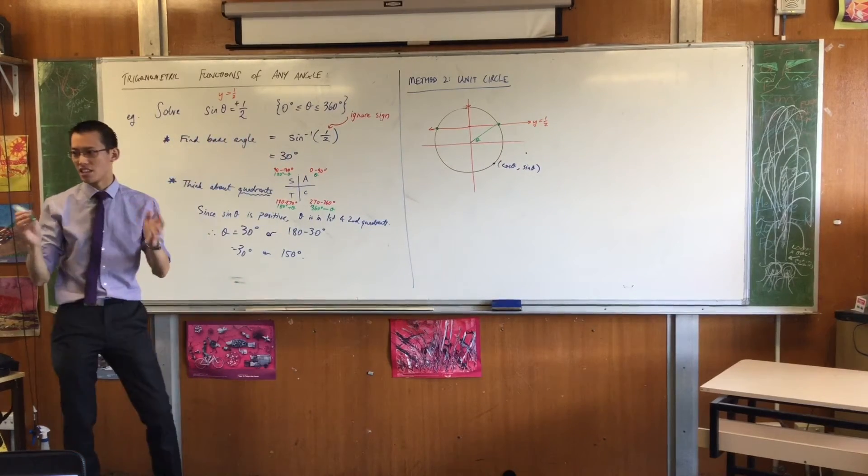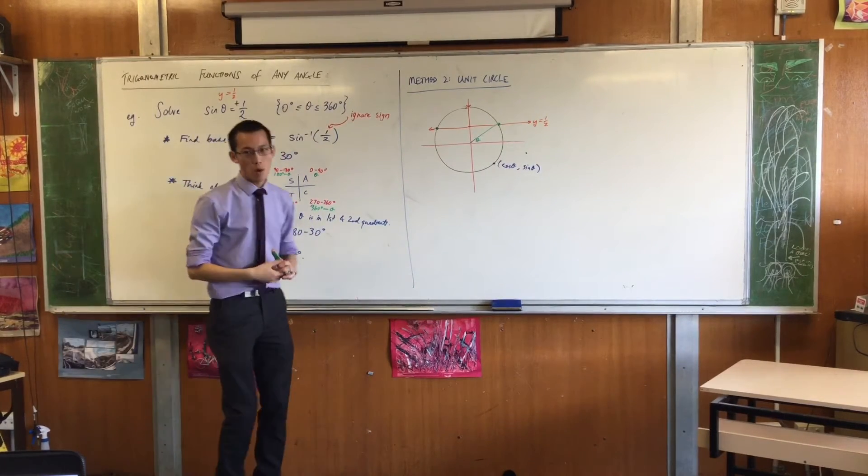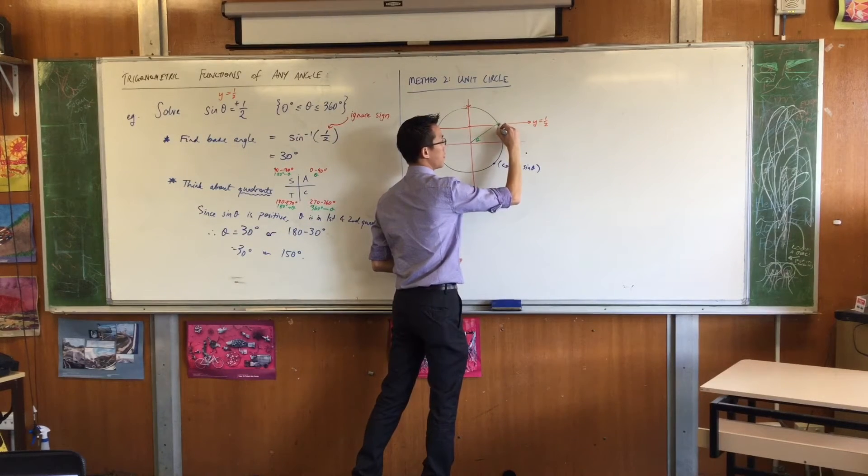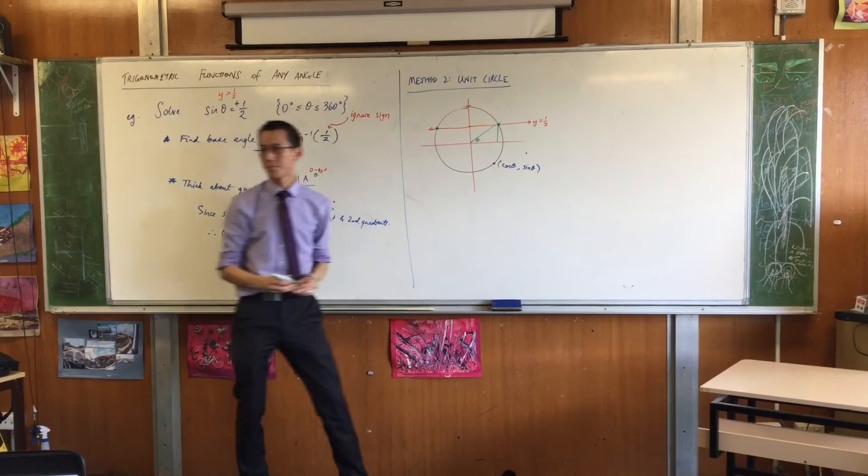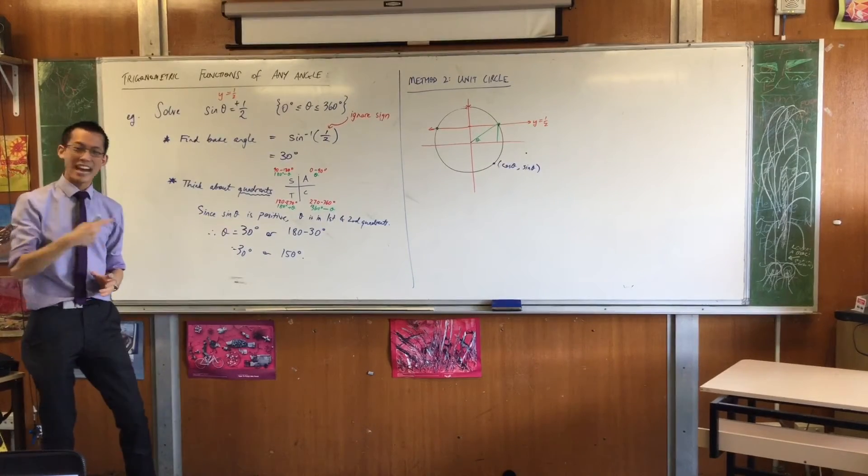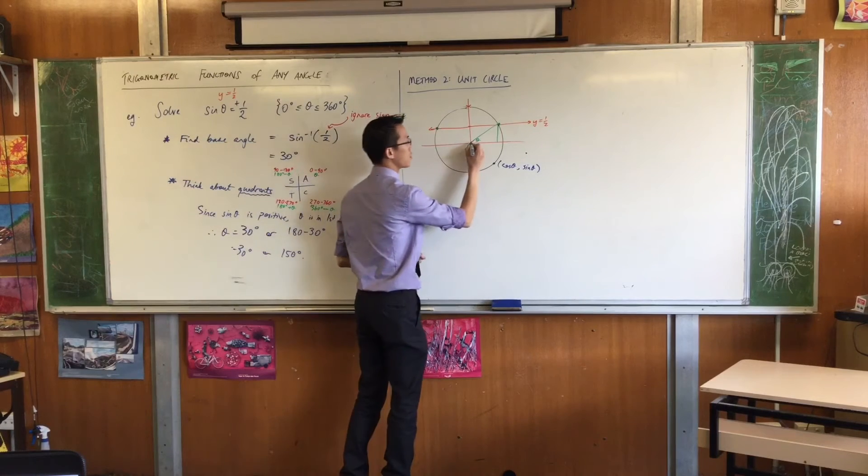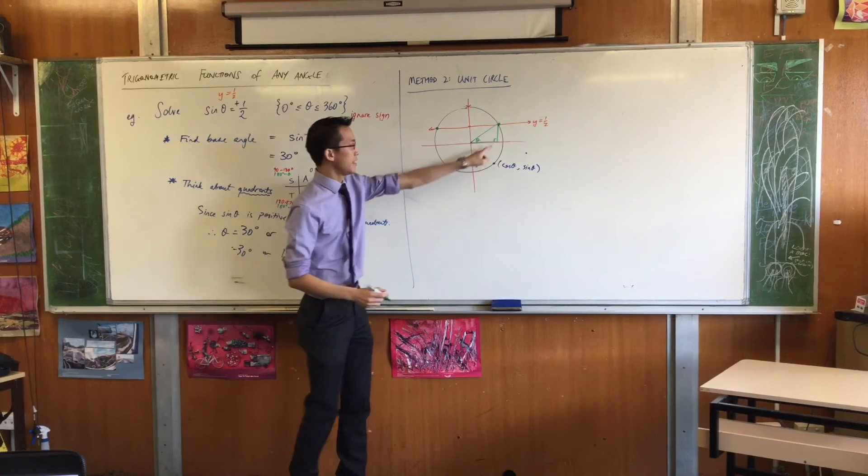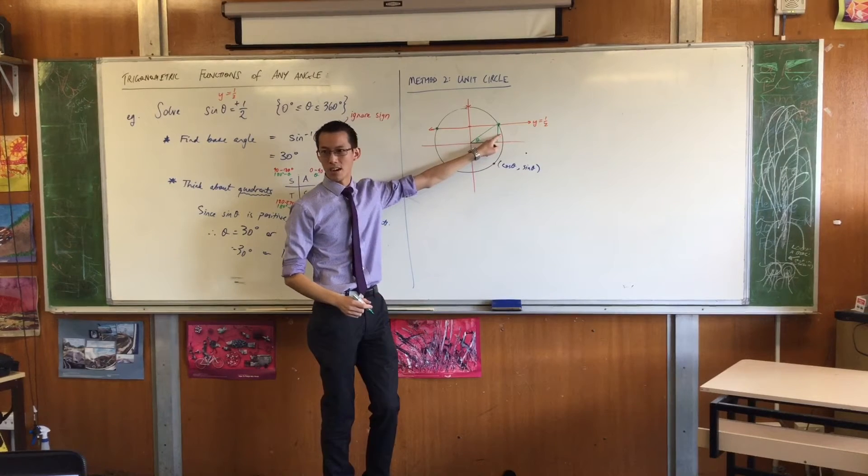Now have a look. This is the genius of this, right? The y-coordinate is a half. Right? That's that distance there. Yes? So if you're thinking now, in that right angle triangle, this one I've just drawn here. Okay? This is a half. A half.